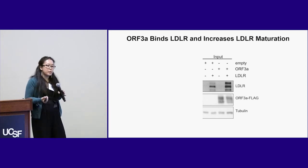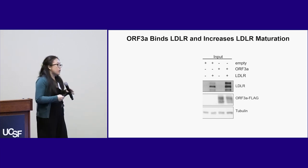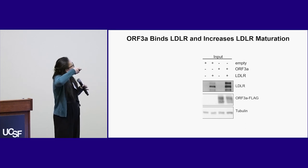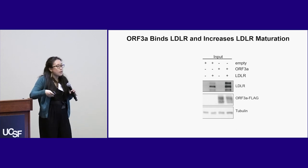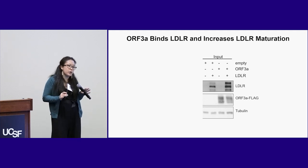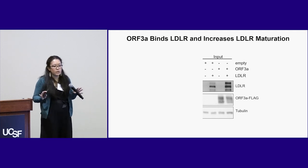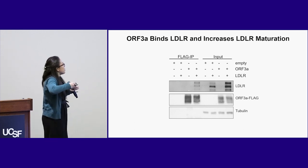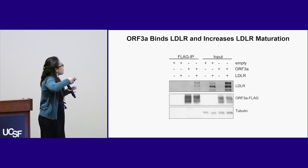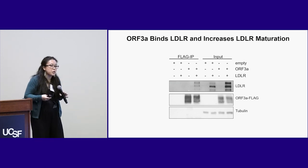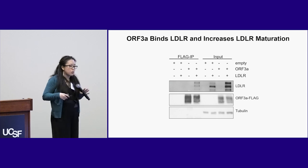We wanted to confirm this interaction was real. When we co-express ORF3A and LDLR on the far right, we see larger bands enriching relative to our empty vector samples, suggesting that ORF3A is doing something with LDLR to enrich for that. We confirmed that in the absence of ORF3A we do not pull down LDLR, but in the presence of both ORF3A and LDLR we are able to pull down both — confirming the interaction — and we're also getting more mature forms of the protein.